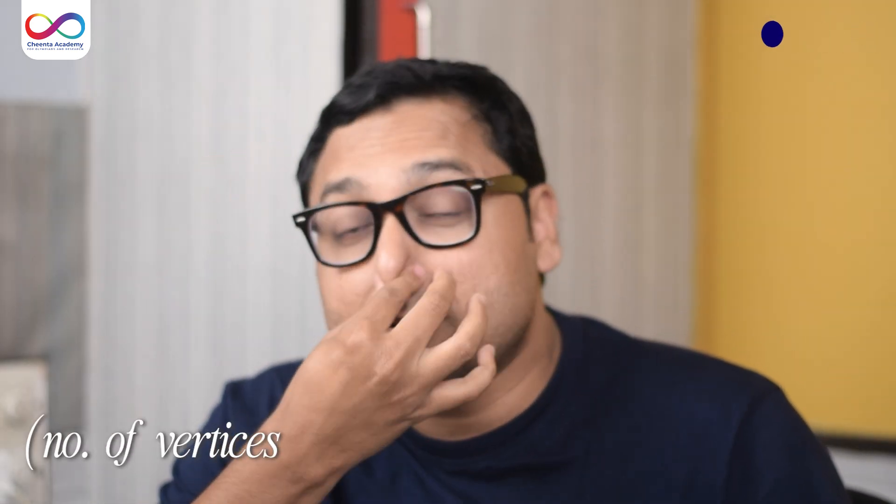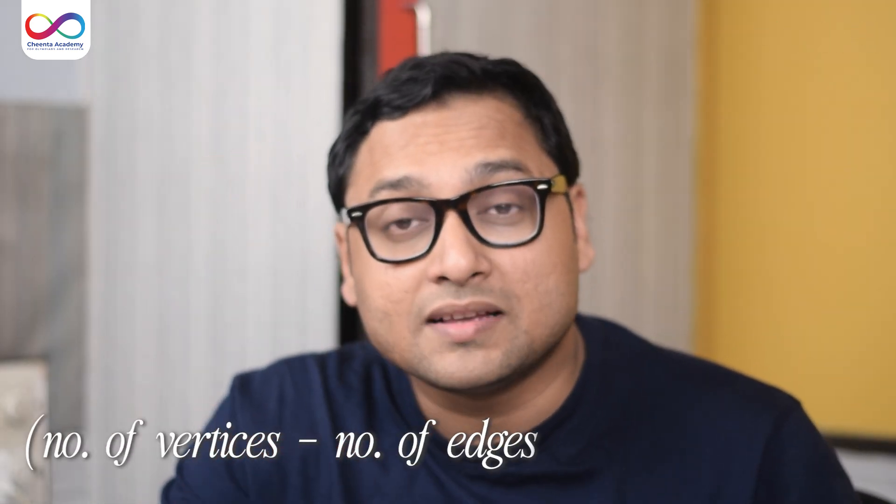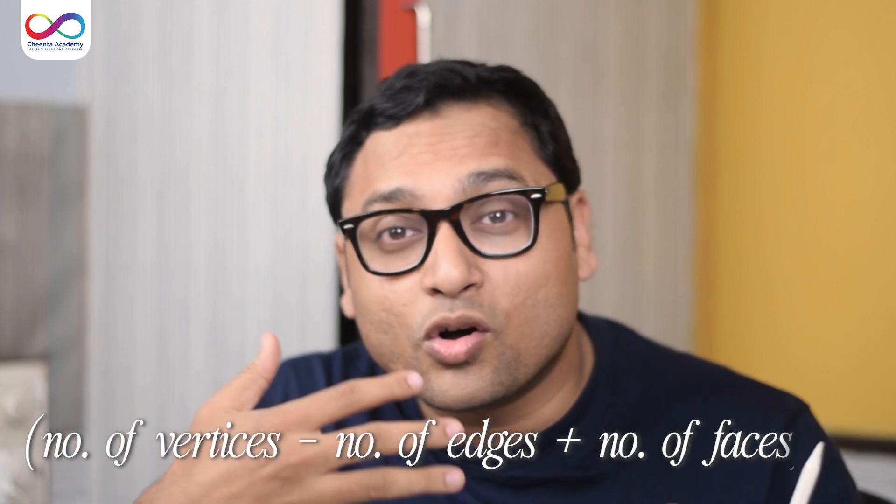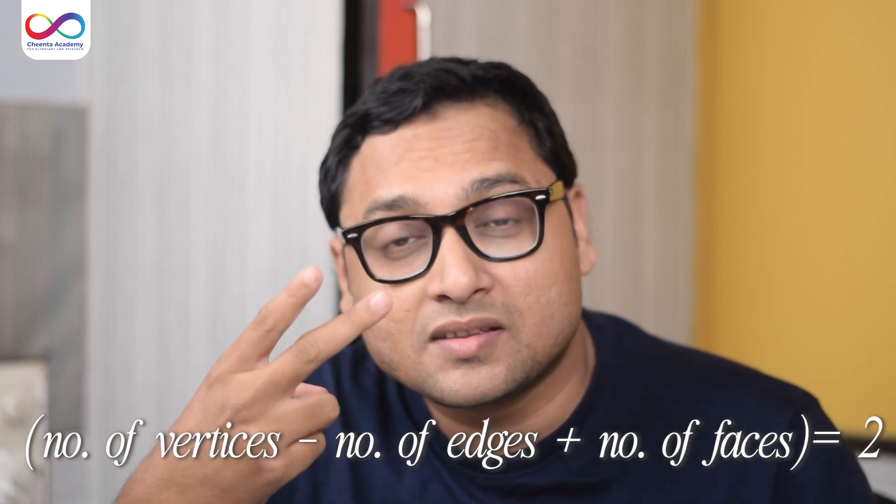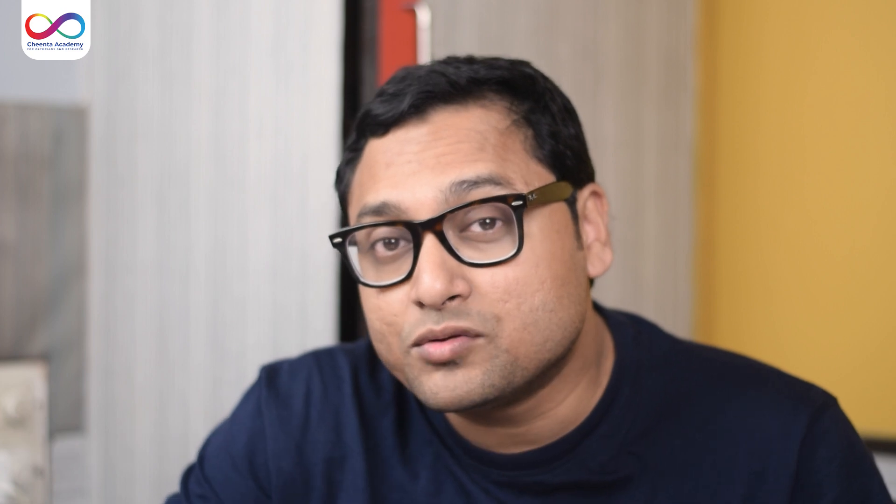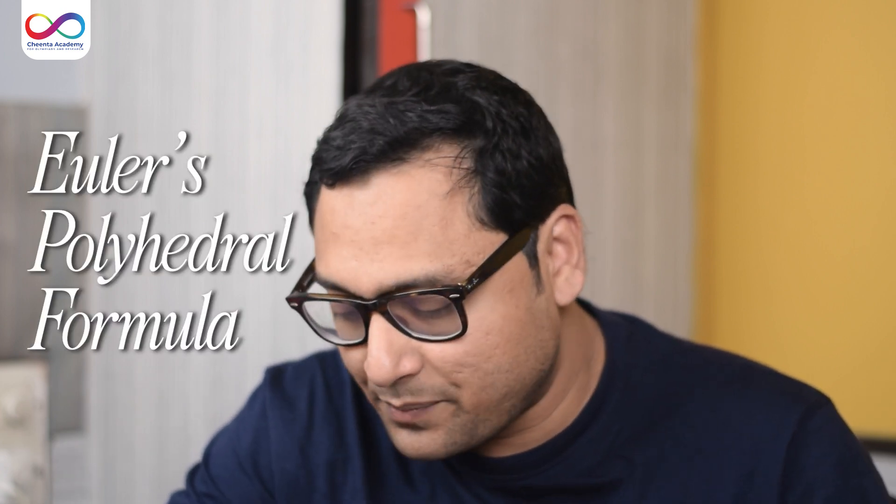Remarkable, isn't it? Number of vertices, minus the number of edges plus the number of faces is always, always two. This particular number of formula is sometimes known as the Euler's polyhedral formula. Okay. So this says something very interesting about the three-dimensional space.